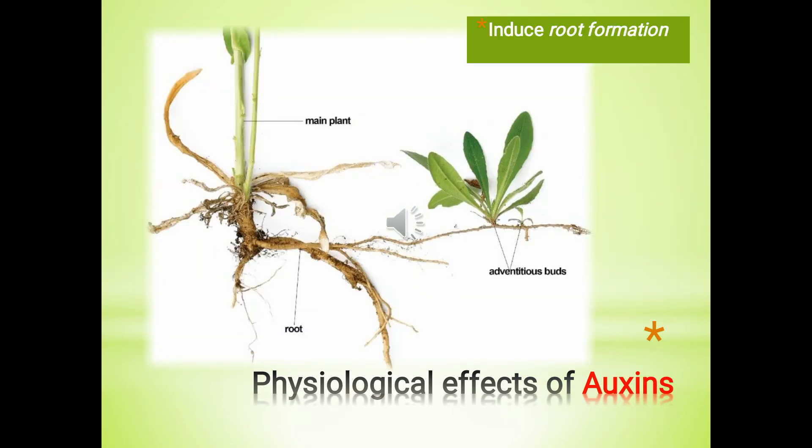Number 2: Auxin induces both growth of pre-existing roots and adventitious root formation. Adventitious roots means branching roots. As more auxin is transported down the stem to the roots, the overall development of the roots is stimulated.